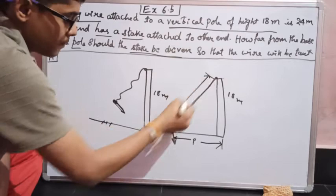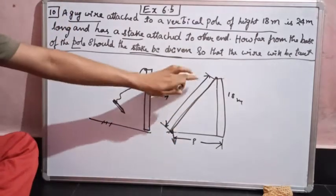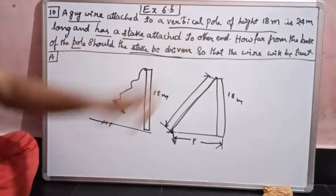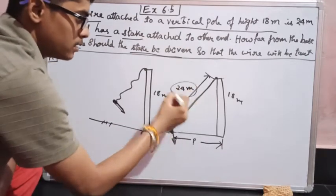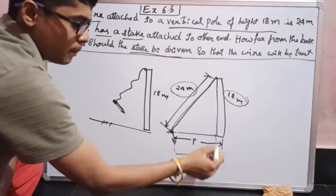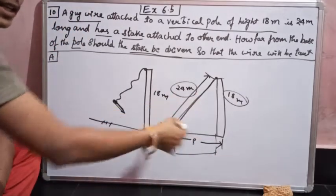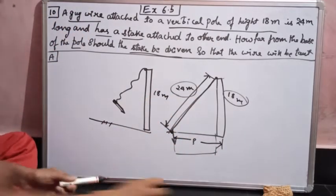What is the length of the wire? This wire length will not change. It is given as 24 meters. We have this length and this length. Now we need to find this by applying the Pythagoras theorem, because it is a right angle triangle.